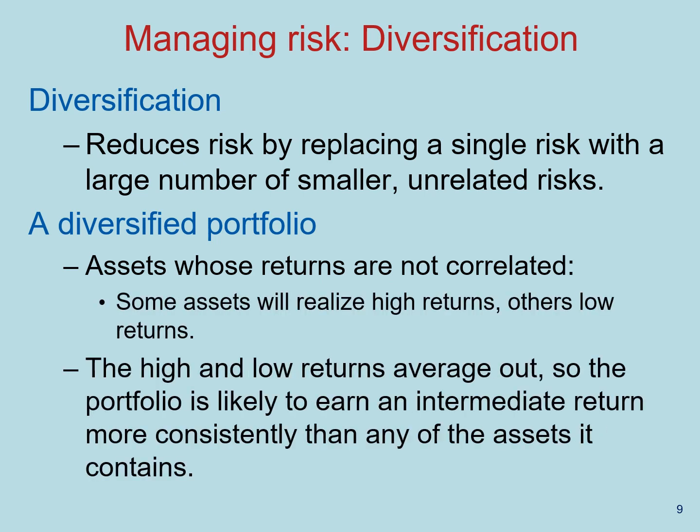Another way to manage risk is through diversification — reducing risk by replacing a single risk with a large number of smaller, unrelated risks. It is essentially not putting your eggs all in one basket. In the financial sense, you want a diversified portfolio of assets whose returns are not correlated with each other. Some assets may do very well while others do very badly, and as long as those highs and lows offset each other, the high and low returns will average out, so the portfolio is likely to earn an intermediate return more consistently than any individual asset.